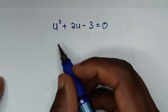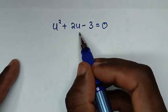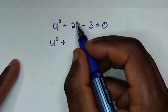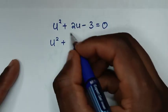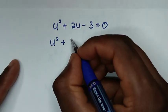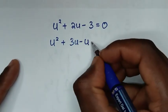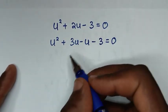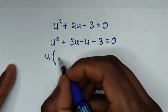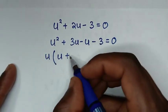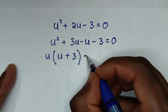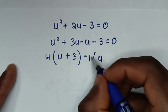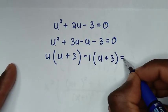Then from here, we will solve this quadratic equation by grouping and factorization. So it will be u² + 2u − 3 = 0. We split 2u as 3u − u, giving u² + 3u − u − 3 = 0. Then u is common: u(u+3) − 1(u+3) = 0.